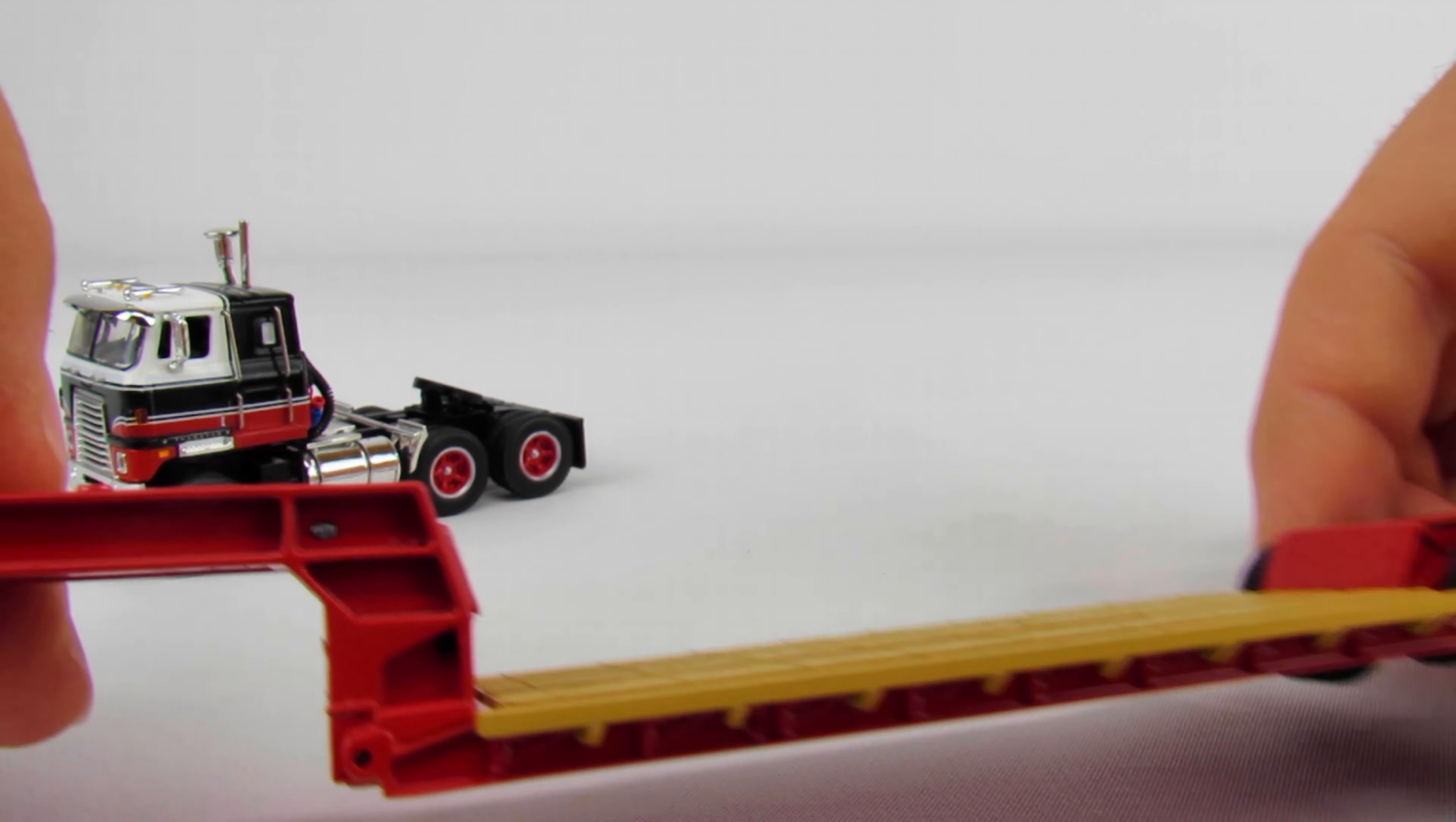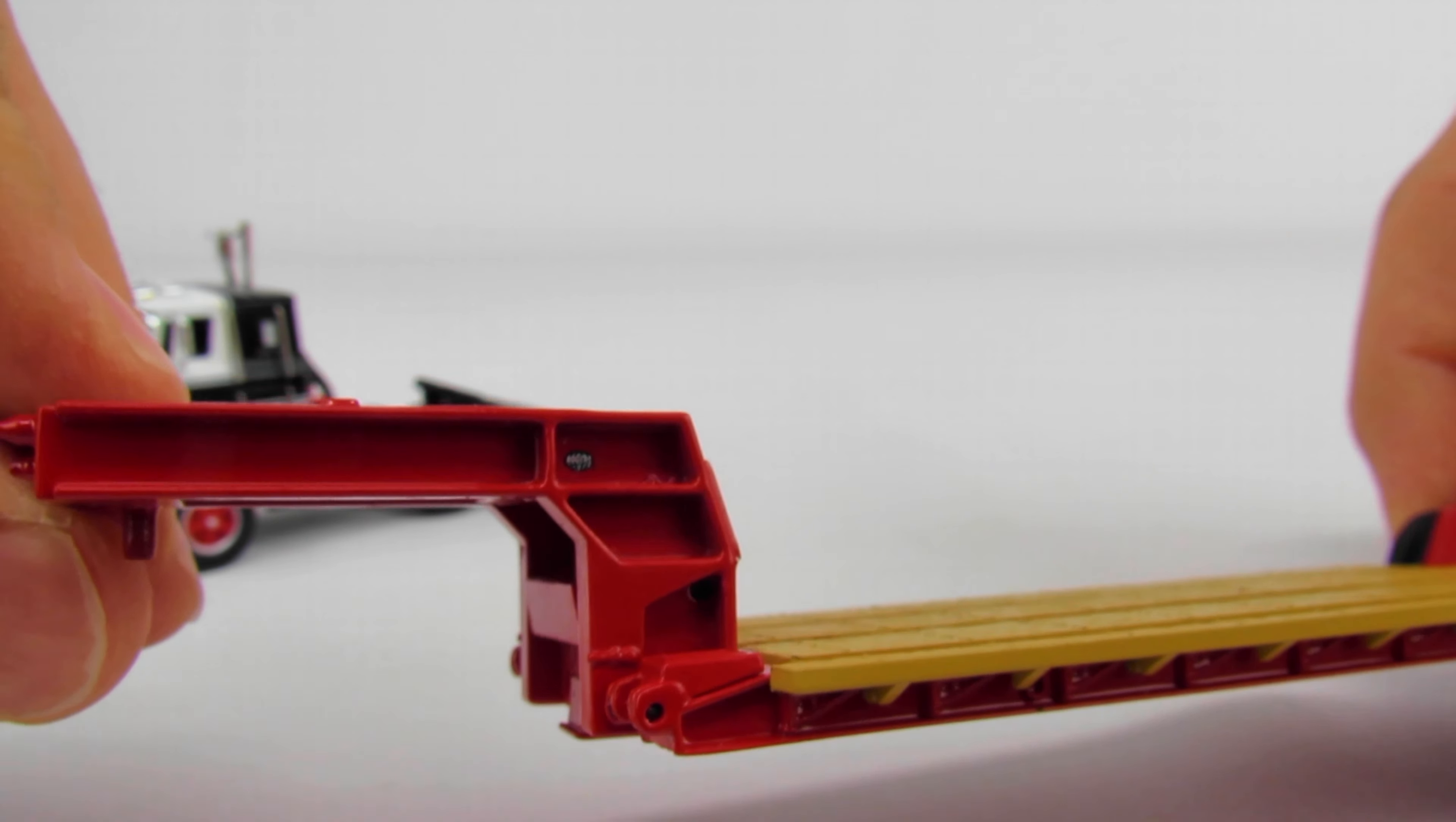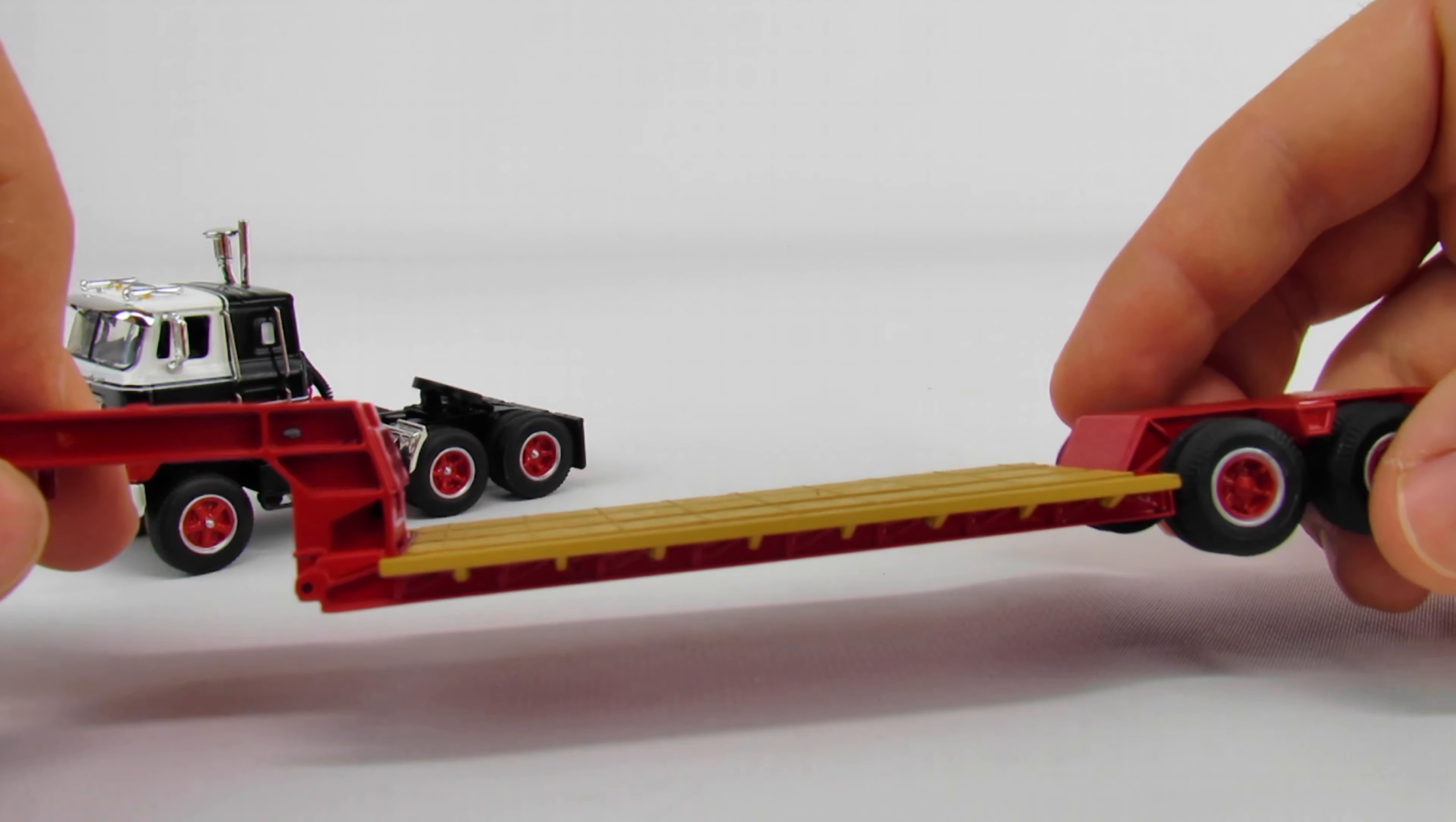This is an older vintage Rogers lowboy. You can see the Rogers logo right there, it's really hard to get a good look at it. It's an older lowboy which is cool. You can see how well-built these things were back in the day.